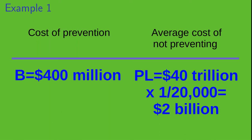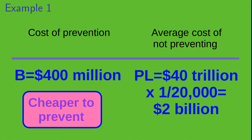Let's look at the two options — preventing and not preventing the asteroid collision. The cost of prevention, B, is 400 million dollars. And let's compare that with the average cost of not preventing the collision, PL. So P was 1 in 20,000, and L was 40 trillion dollars. We multiply those two together and get 2 billion dollars. So in this case, it's cheaper, on average, to prevent the asteroid colliding with the Earth.